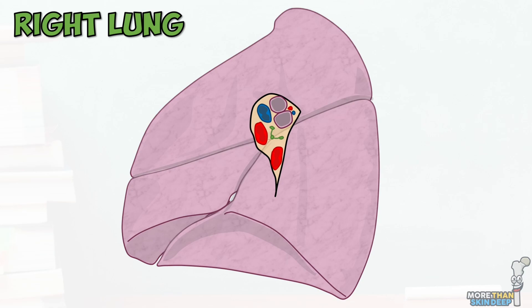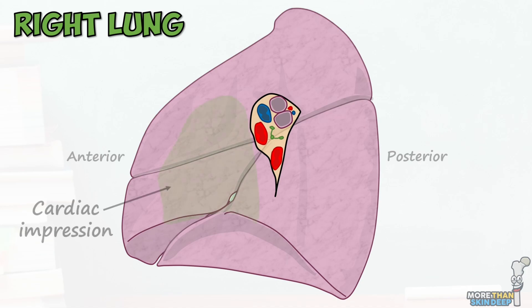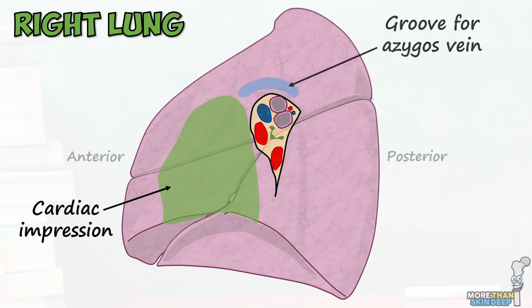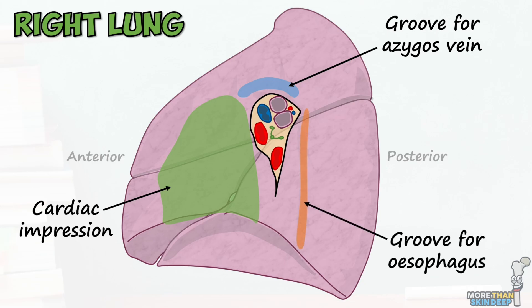Here we are looking at the mediastinal surface of the right lung. This is anterior and this is posterior. We see this big indentation where the heart sits, known as the cardiac impression. This groove is where the azygous vein sits. This is the groove for the oesophagus and this is the hilum here. We call the contents of the hilum the lung root, and this collection of structures is the only thing that connects the lungs to the contents of the mediastinum.